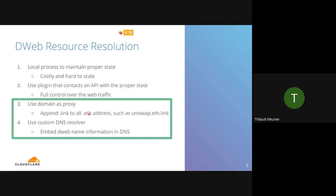The third way is to use a proxy — that's what eth.link does. You append .link to any ENS address, such as uniswap.eth, and you get uniswap.eth.link, which gives you the Uniswap website. A fourth way is to use a custom DNS resolver, as Mike just presented — you can use it to get the naming and that's how we preserve existing ENS integration.